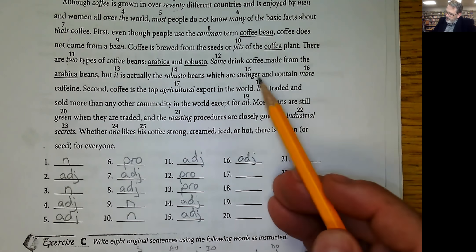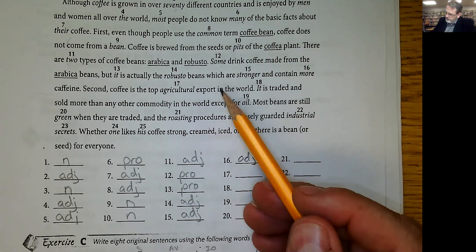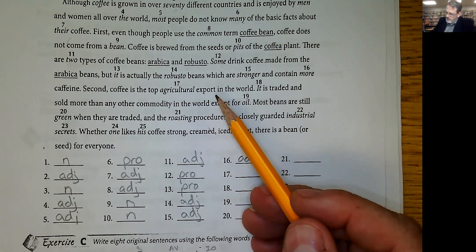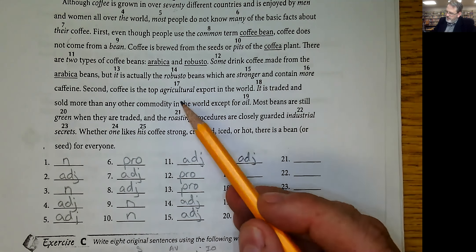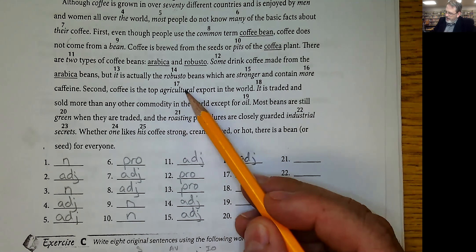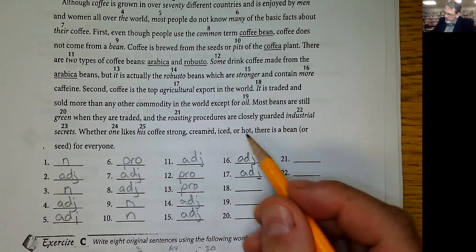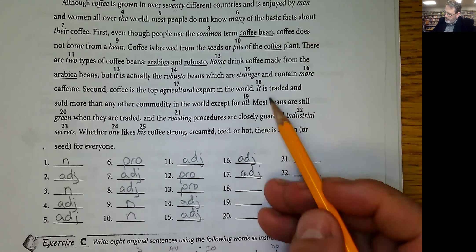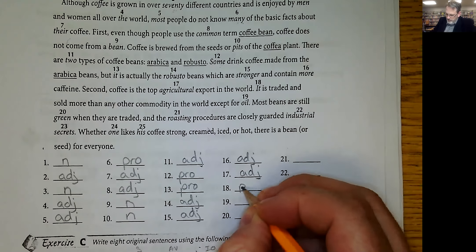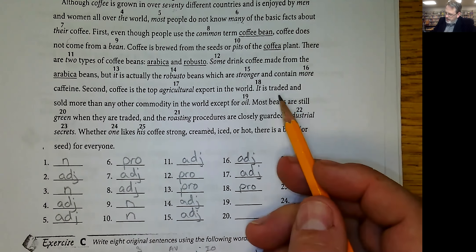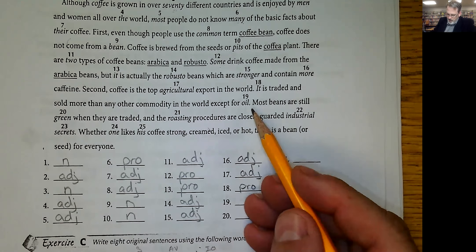Number 17, coffee is the top agricultural export, that's an adjective. What kind of export? Agricultural export in the world. It is a pronoun. Is traded and sold more than any other commodity in the world except for oil.